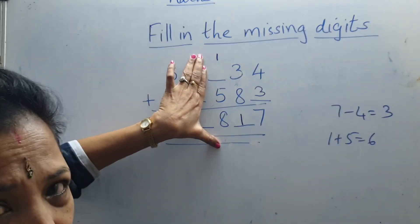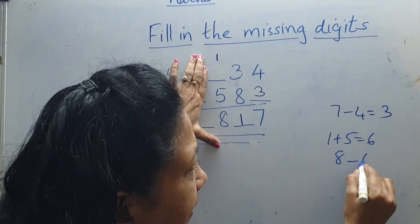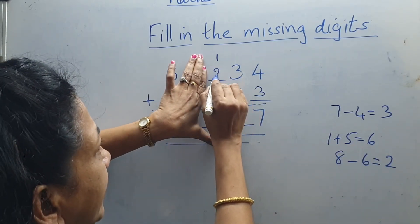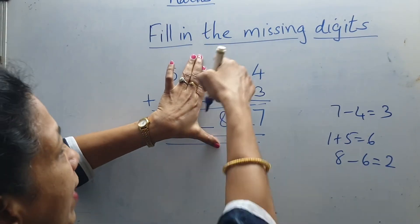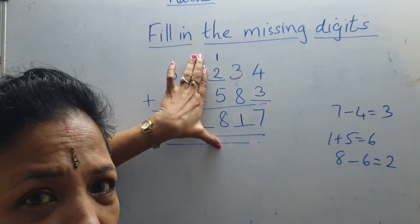But here 8. So which number will be here? 8 minus 6. What is 8 minus 6? 2. So here will come 2. 1 plus 2 plus 5. 1 plus 2 is 3. 3 plus 5 is 8.